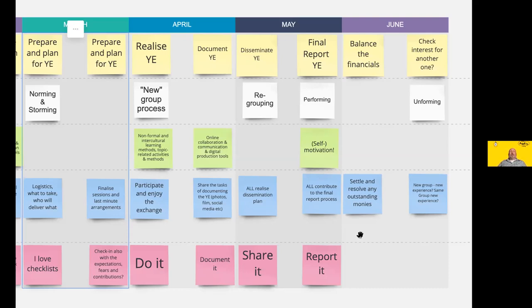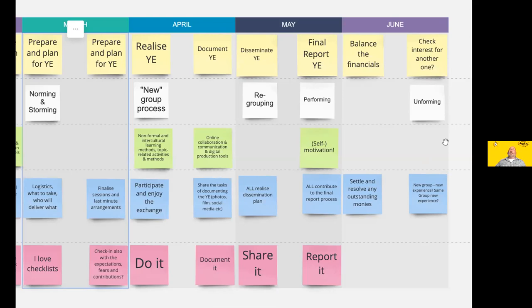When a project is approved, you only get a percentage of the funding first, and then upon a successful agreed final report you get the rest of the balance. Once that's resolved, you might sit down with the young people and ask: do we want to do another one? A different topic? A different theme? Or maybe it's a new group — and the whole process starts again.